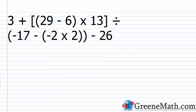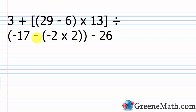Let's take a look at another one. This should be up here but it doesn't fit on the screen, so it had to continue on the next line. We have 3 plus, and then inside of brackets, we have this quantity 29 minus 6, then times 13. Then we're dividing by, inside of these parentheses, negative 17 minus, inside of another set of parentheses, negative 2 times 2. And then we subtract away 26.